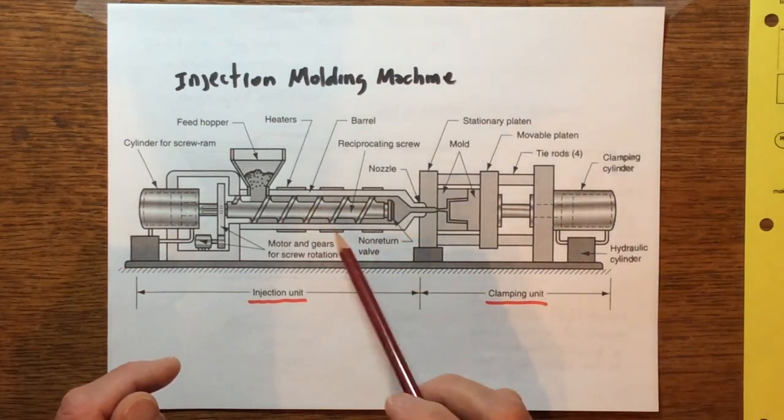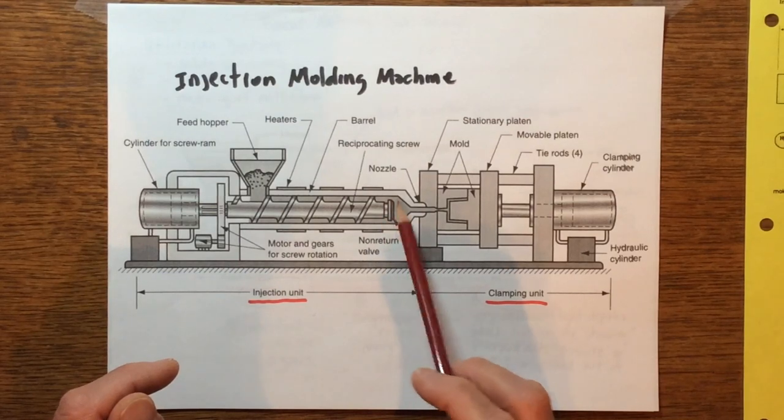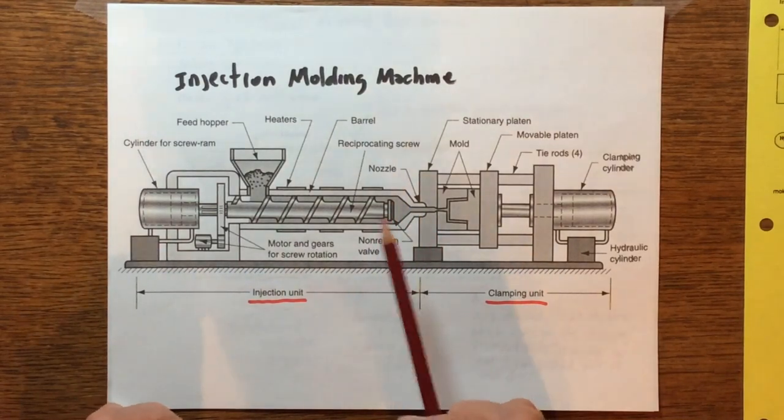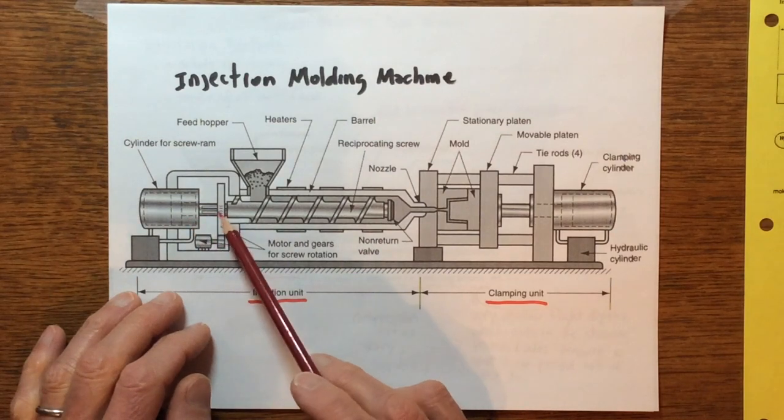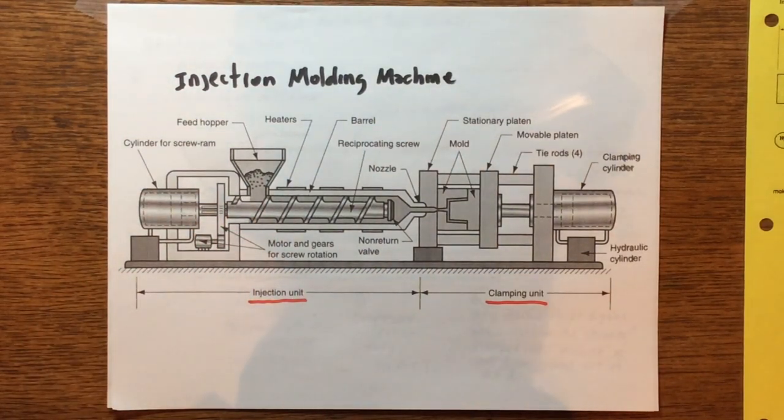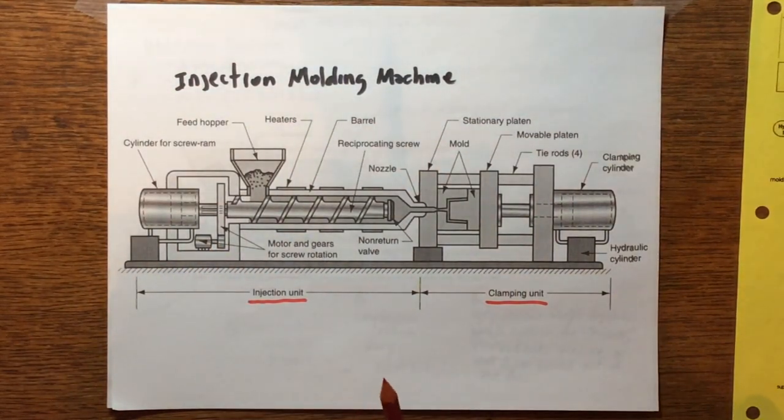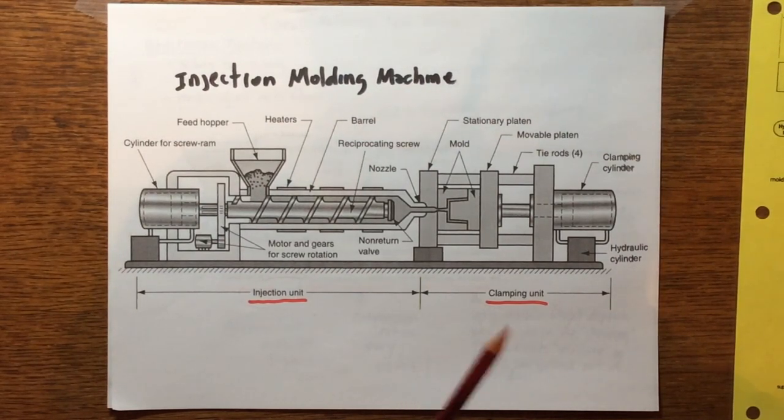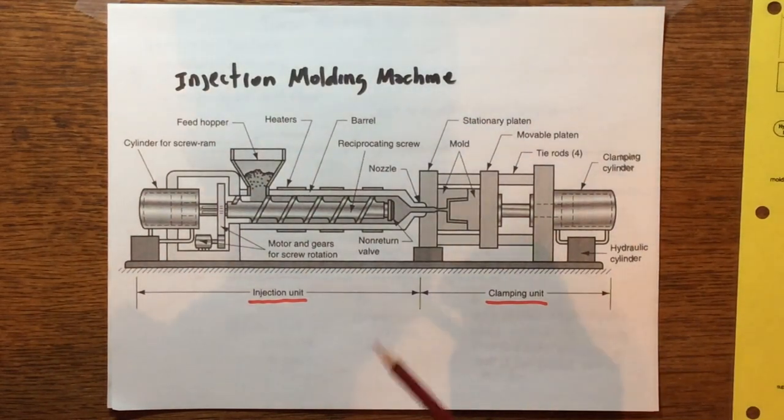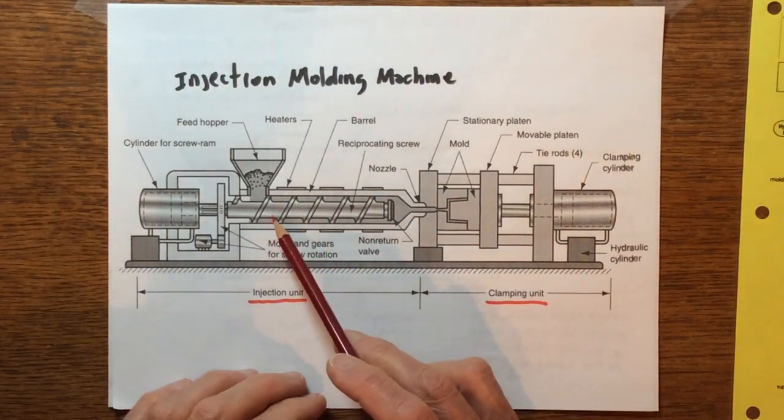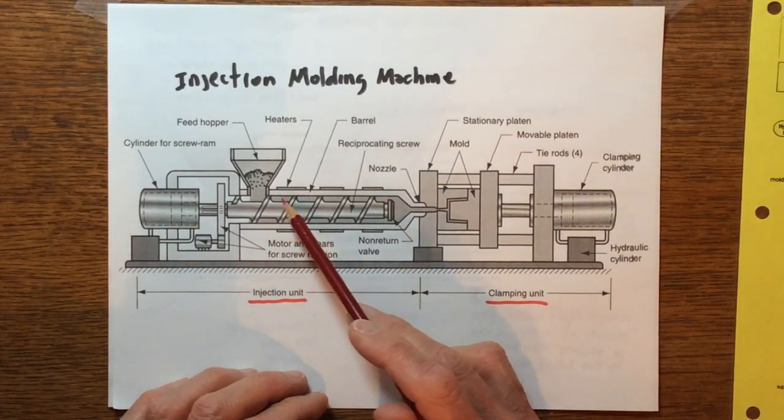It has the exception of this front end because it has a non-return valve, but be it as it may, we need to provide rotation. We're going to do that via a hydraulic motor nine times out of ten.